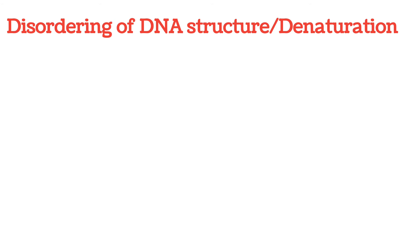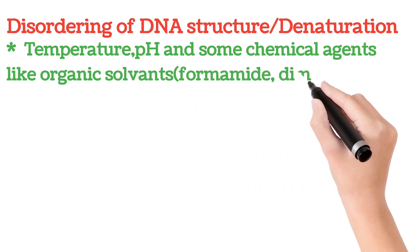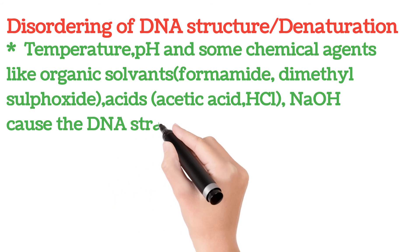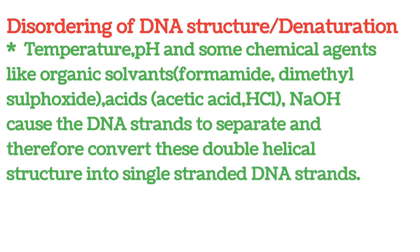When DNA is separated from a cell and placed in a solution, various factors affect it. Temperature, pH, and some chemical agents like organic solvents, formamide, DMSO, acids like acetic acid and HCl, and alkali like sodium hydroxide all break the interactions and bonding between nitrogenous bases, causing DNA strands to separate from each other. Double-stranded DNA is thus converted to single-stranded DNA. Temperature is the most common factor used in the laboratory to denature DNA.